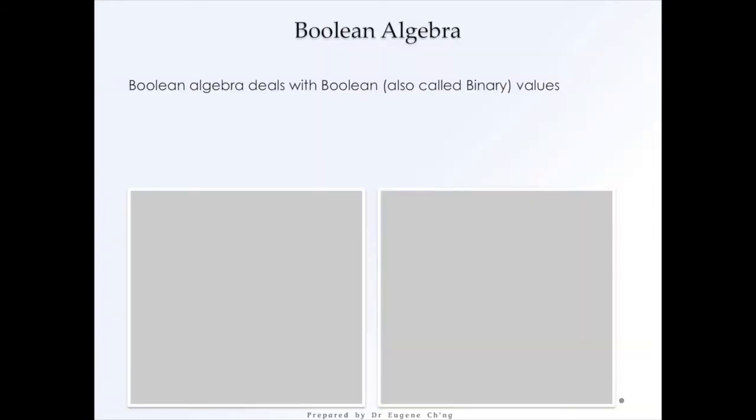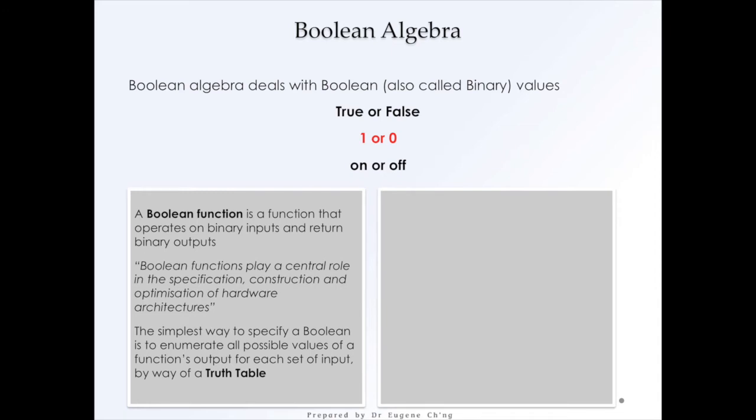This is the elementary logic gate tutorial. So in order to learn Boolean logic, we have to know Boolean algebra. Boolean algebra essentially deals with Boolean, also called binary values. For example, binary values only have two states. It's true or false, one or zero, or on or off. And it basically switches, as I covered in the first tutorial.